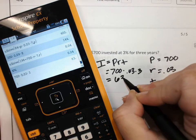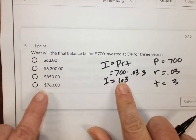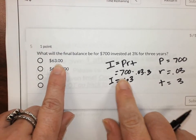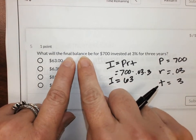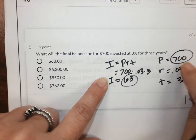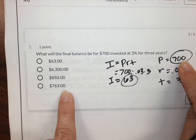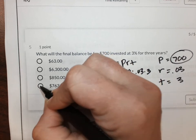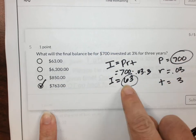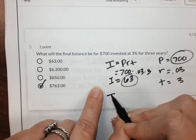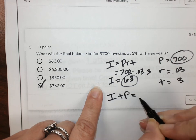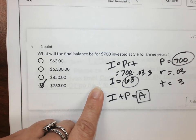And I'm getting an interest of $63. You might have gone and picked that, but that's not what it's asking for. The final balance means I have to go say 700 plus 63, and that would be 763. You've got to add that principal back on. The interest plus the principal equals the final balance.